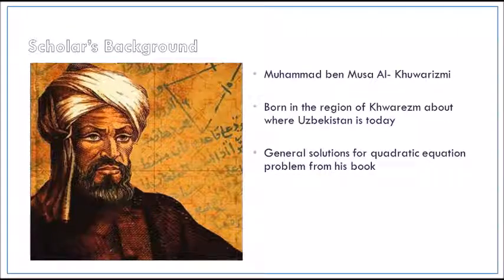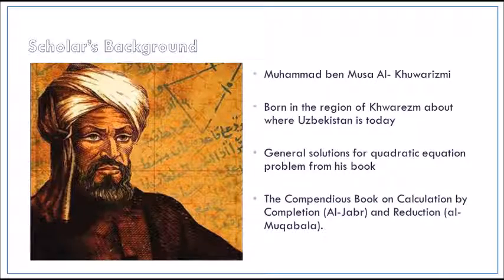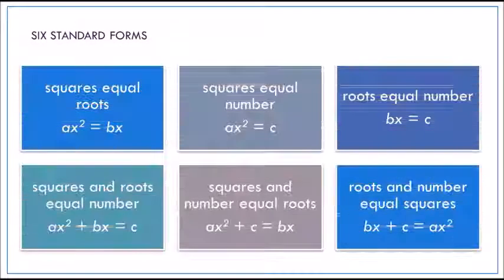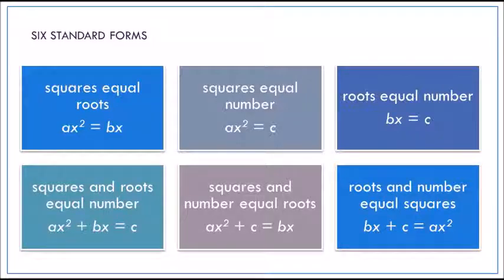His name was Muhammad bin Musa Al-Khawarizmi, born in the region of Al-Khawarizm, about where Uzbekistan is today and managed to get the general solution for quadratic equation from his book titled The Compendious Book on Calculation by Completion Al-Jabar and Reduction. And he managed to get into 6 standard form and I will explain the method which is squares and roots equal to the numbers.